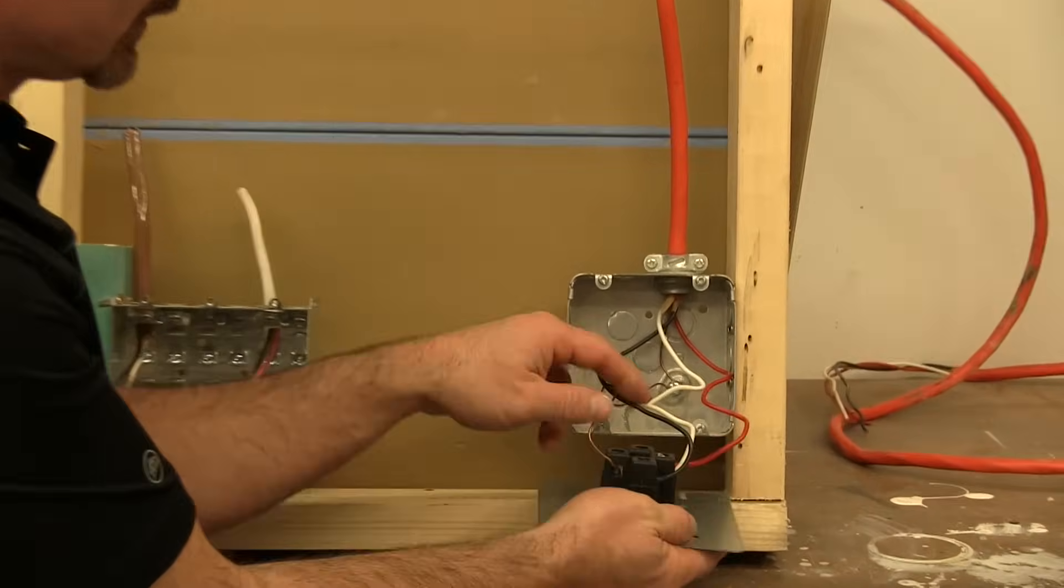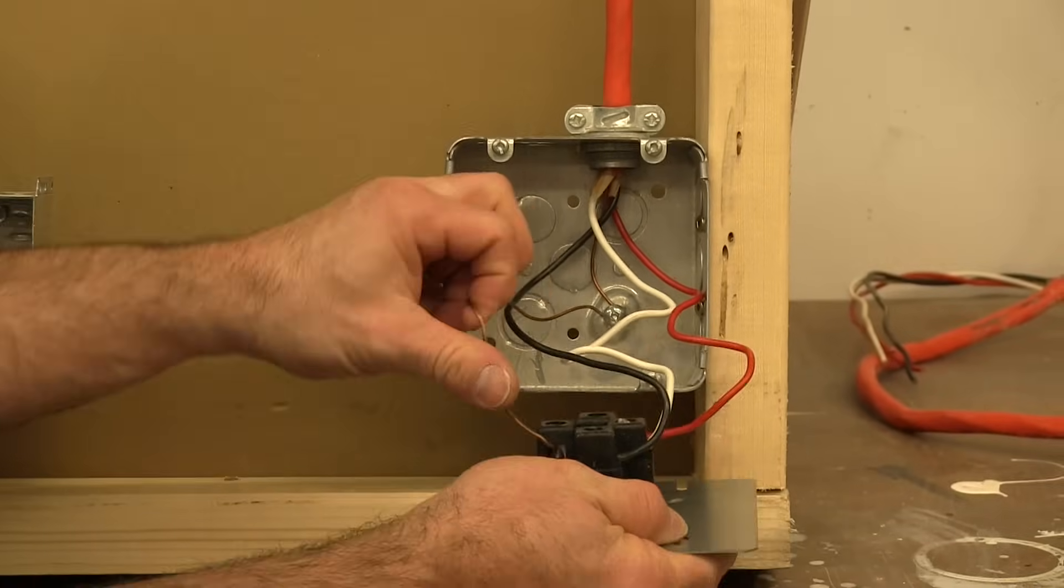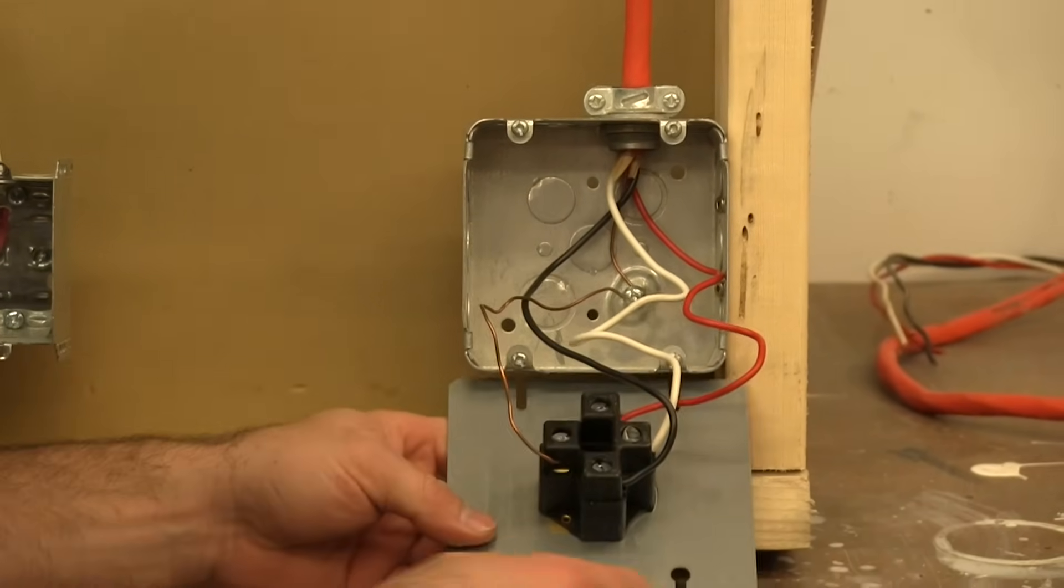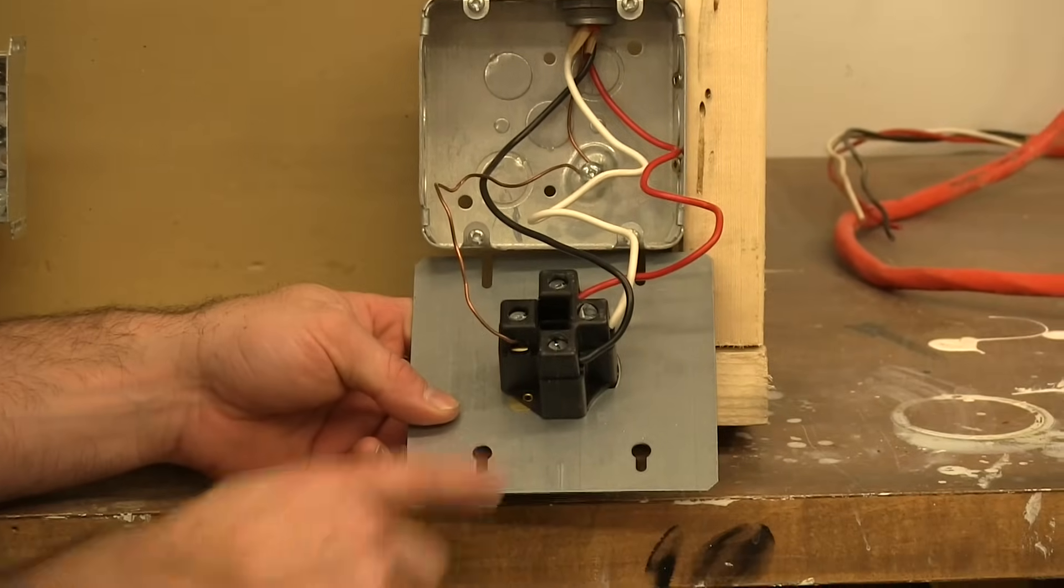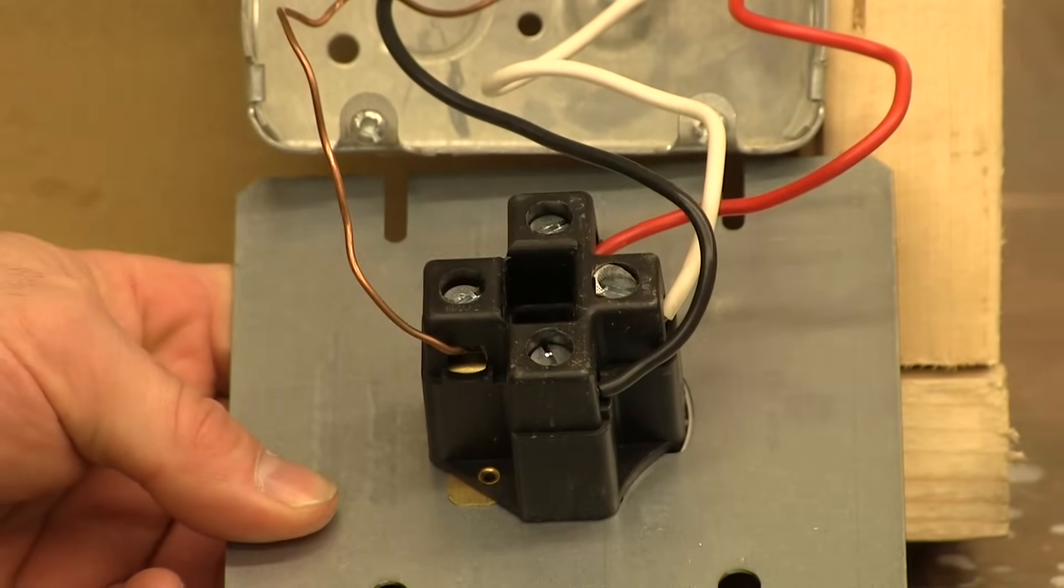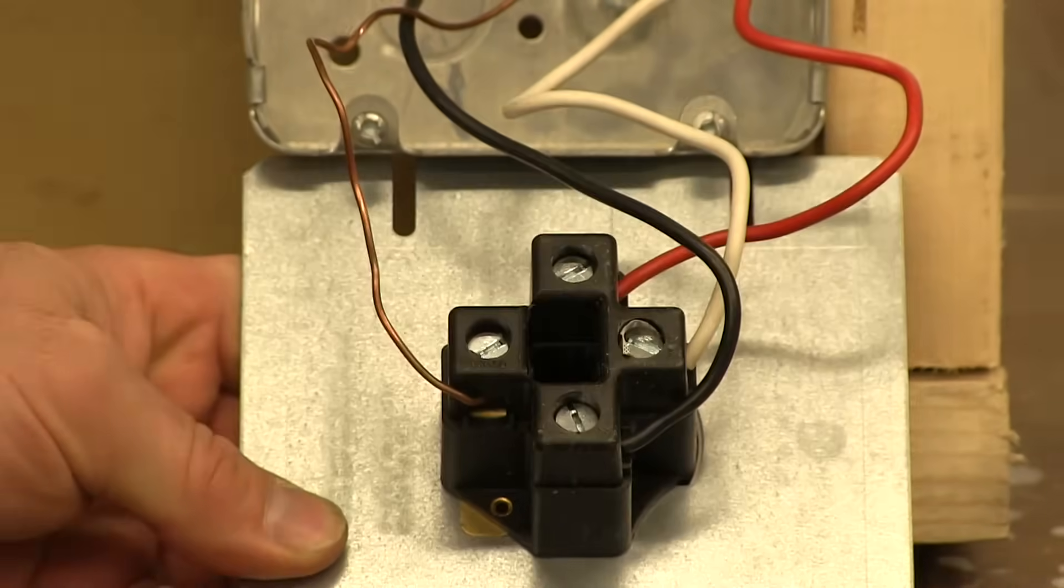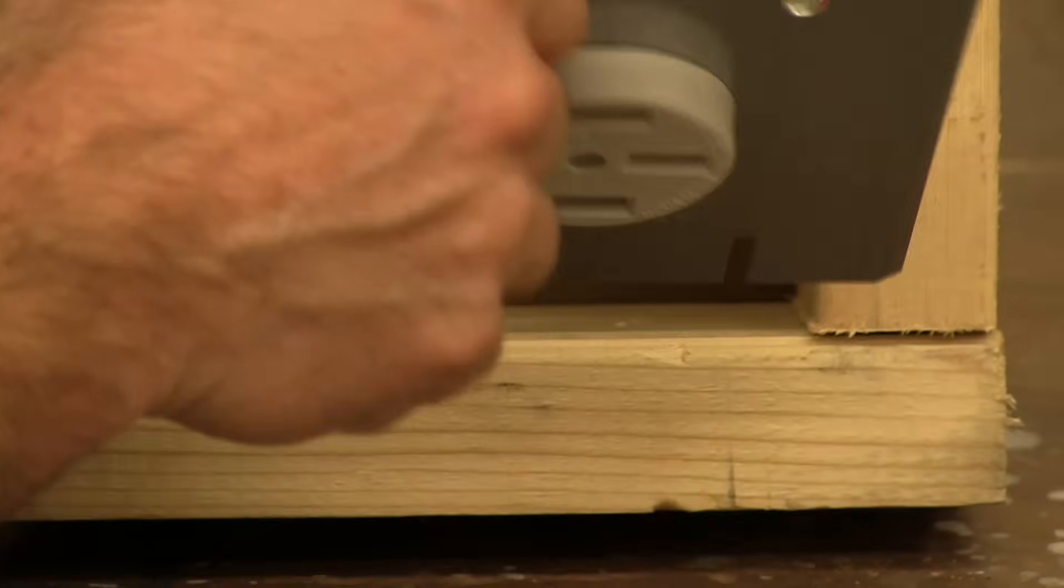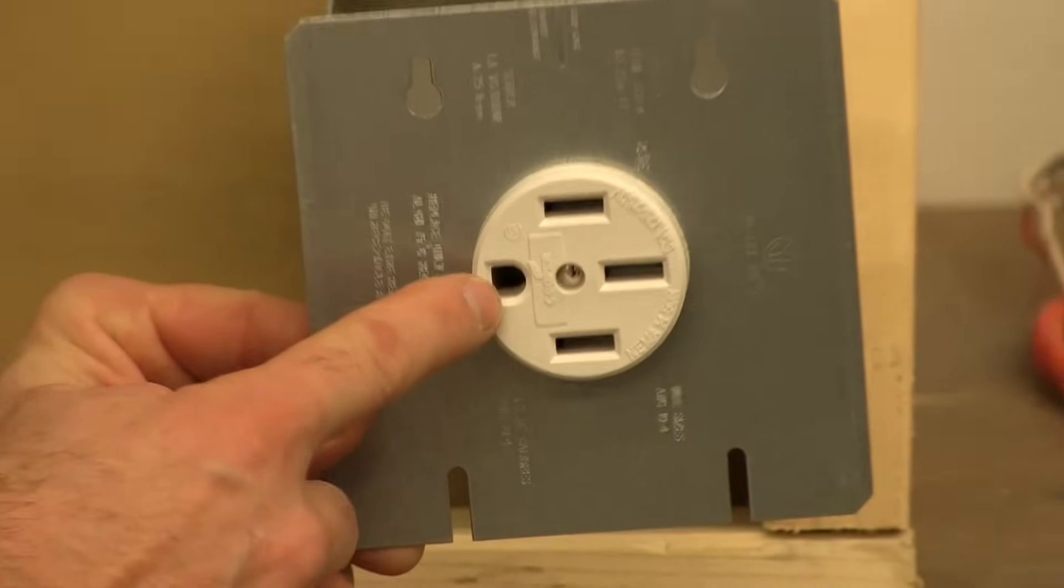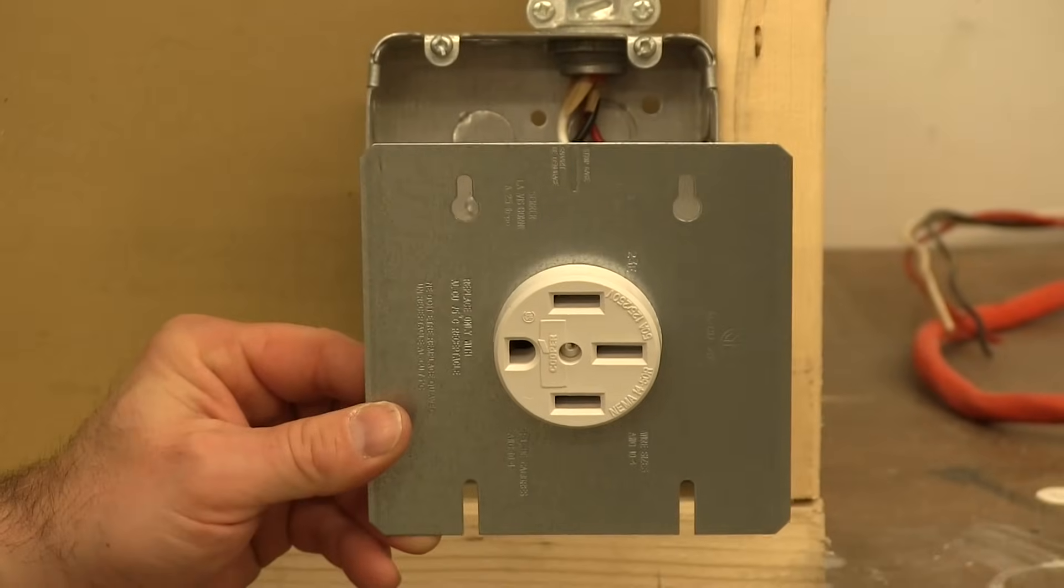The wiring is pretty simple really. Normally right on the back of your connections there's going to be some writing or some lettering. Now I don't think the camera can zoom in that close but over here this one says ground. For reference you can look on the front and the round looking plug is going to be your ground.